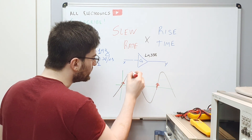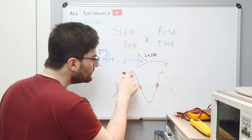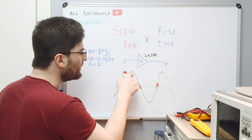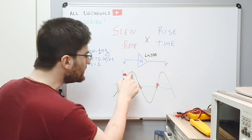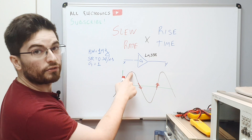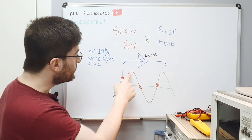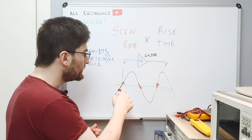And here, at this point, we see that we don't have any change in the signal. So here the slew of the signal is zero. Here the slew of the signal is maximum.